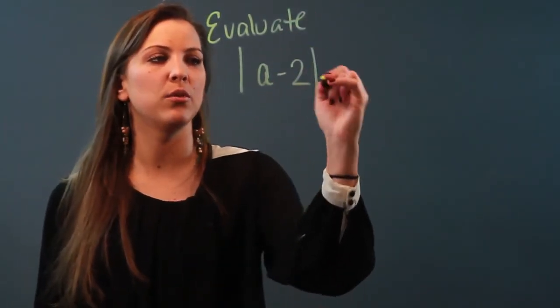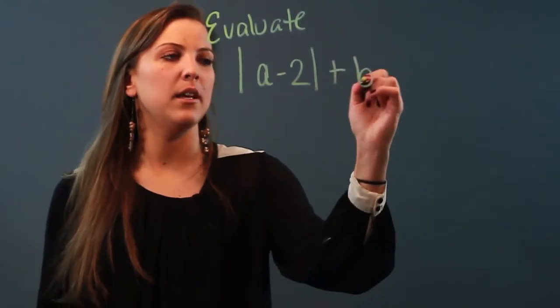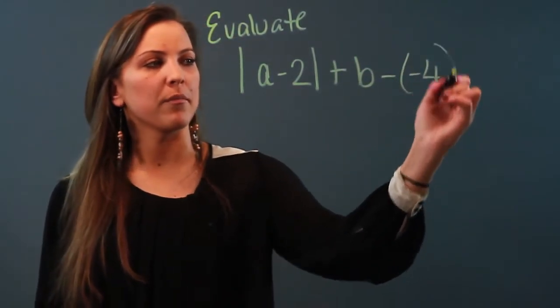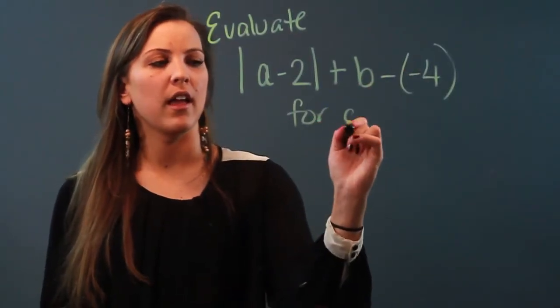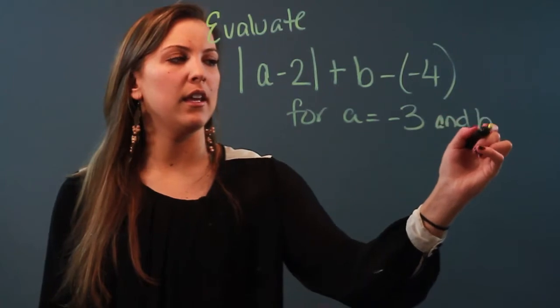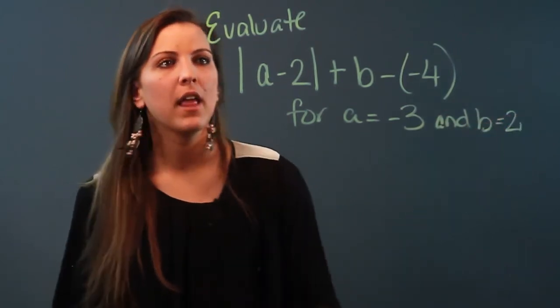Let's say we have a problem that says evaluate |a - 2| + b - (-4) for a = -3 and b = 2.